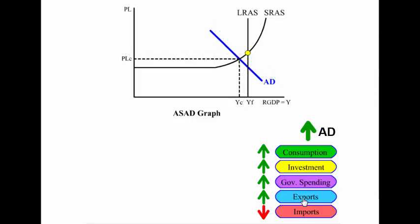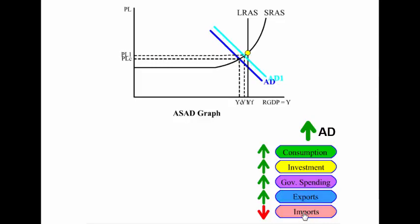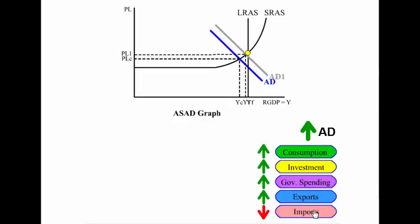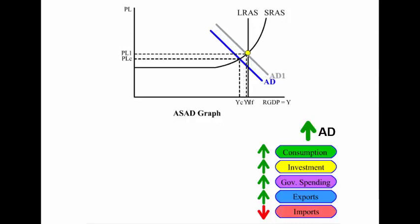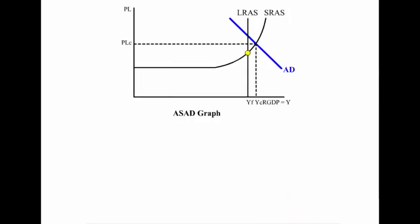If exports increase, this causes aggregate demand to shift to the right, driving the price level up and the real GDP and national income up. If imports decrease, this drives aggregate demand to shift to the right, driving the price level up and the real GDP and national income up.